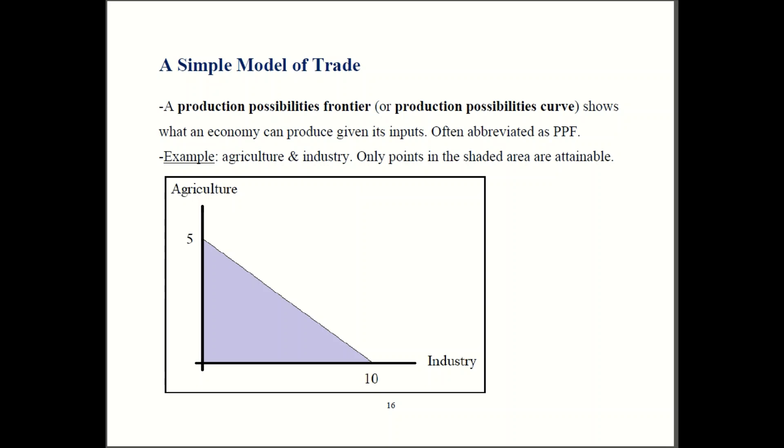So we'll use something called a production possibilities frontier or in some textbooks a production possibilities curve. The way it works is very simple. Any point on or inside the line is stuff that we can produce. Stuff that's outside is just not possible. For notation you'll often see PPF for production possibilities frontier. In the books that use production possibilities curve you'll see PPC quite often. So here we have an economy that has agriculture and industry and it's how much they can produce overall. You could have 10 units of industry and zero agriculture, five agriculture and zero industry, or some mix of the two depending upon which point you're picking.